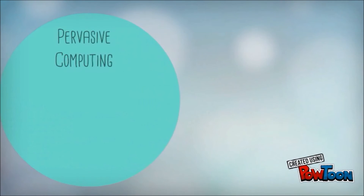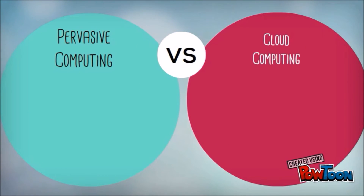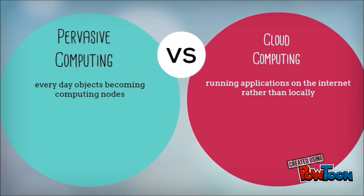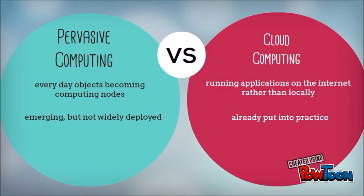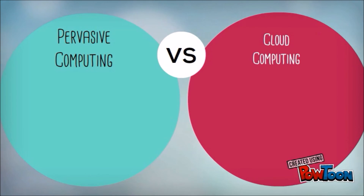As a summary of our comparison: pervasive computing refers to everyday objects becoming computing nodes, while cloud computing refers to running applications on the internet rather than locally. Both concepts have been around for years, sometimes under different names. Pervasive computing is emerging but not widely deployed, whereas cloud computing is already put into practice. These concepts aren't directly related — pervasive computing is about adding computing to everyday objects and activities, while cloud computing is about hosting services.